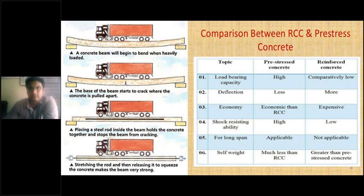That is the main point: the three stages — without reinforcement, with reinforcement, and with prestressing — show us the progression. So let's see the comparison between RCC and prestressing concrete, compared with the help of six parameters.